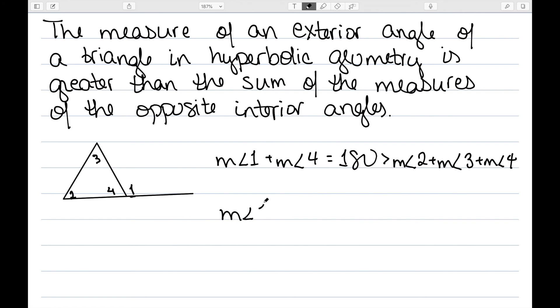Subtracting angle 4 from both sides gives me the measure of angle 1 is greater than the measure of angle 2, plus the measure of angle 3, which gives me exactly what I need.